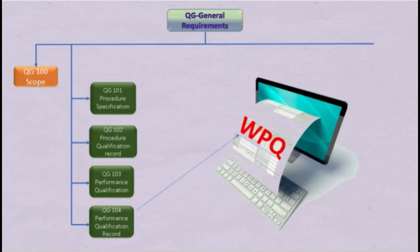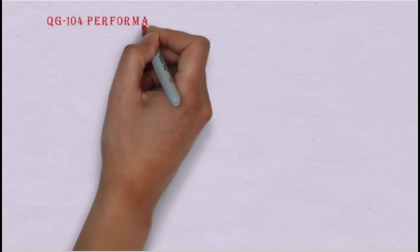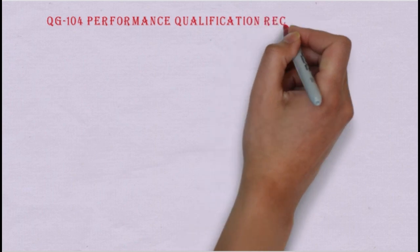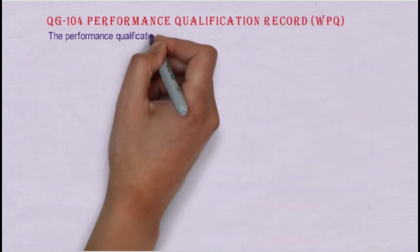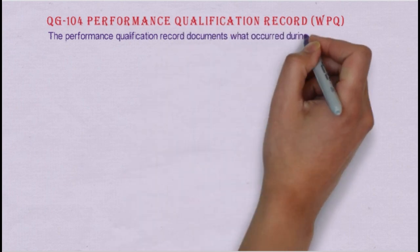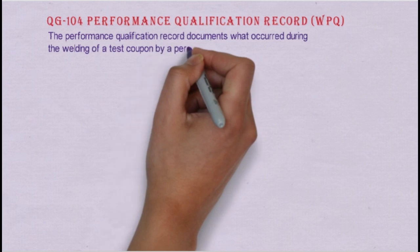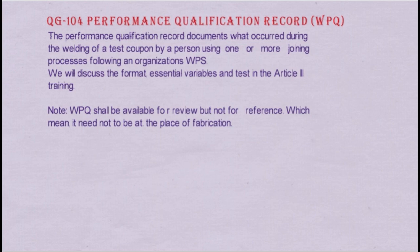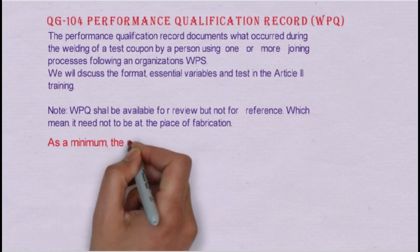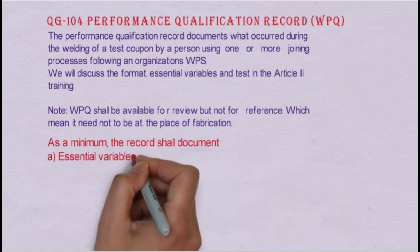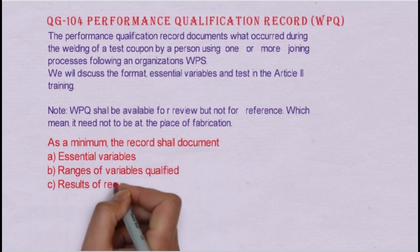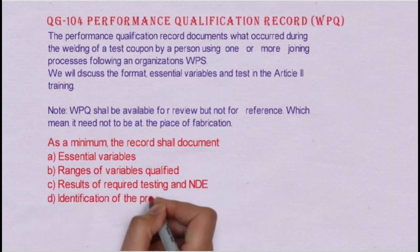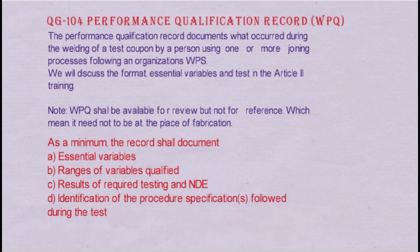QG104 covers the Performance Qualification Record, or WPQ. The WPQ documents what occurred during the welding of a test coupon by a person using one or more joining processes following an organization's WPS. We will discuss the format, essential variables and tests in the Article 3 training. WPQ shall be available for review but not for reference — meaning it need not be at the place of application like the WPS. As a minimum, the record shall document: essential variables, range of variables qualified, results of required NDE, and identification of the procedure specification followed during the test.